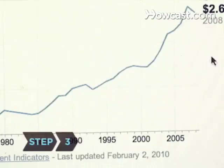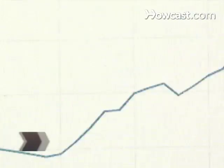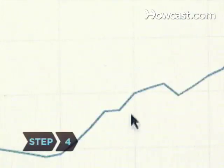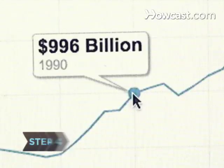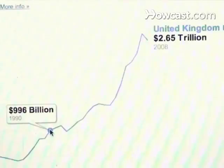Step 3: Select a base year that you will use for comparison to the current gross domestic product. Step 4: Get the real GDP measurement for your country. The real GDP is the gross domestic product of your country, measured in dollars from your base year.